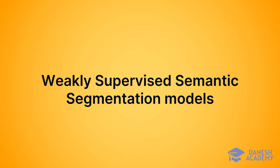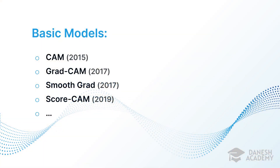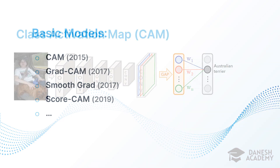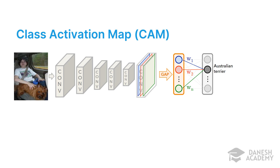Now let's talk about how a model can learn the location of different objects in an image while being trained only on weakly supervised datasets. Let's dive into some foundation models introduced around 2015 and 2016, which were among the first ideas to implement WSSS models on deep learning networks. The first method is Class Activation Mapping, also known as CAM, released in 2015. The main idea was to first train a classifier model, then create activation maps.